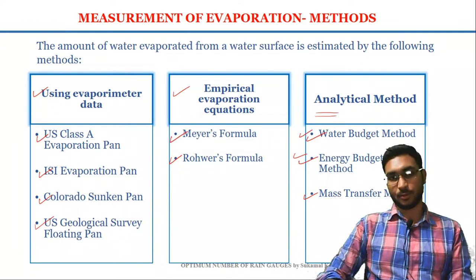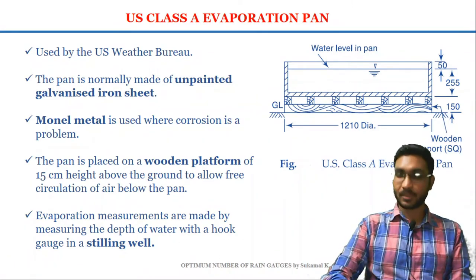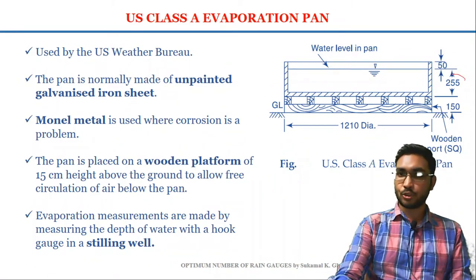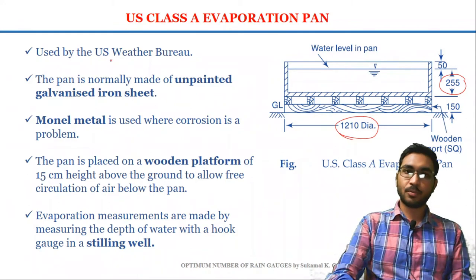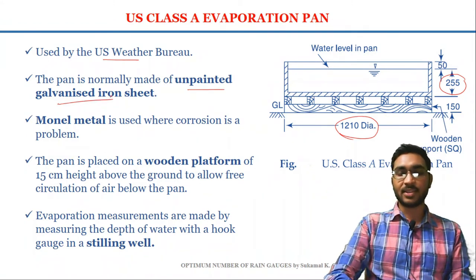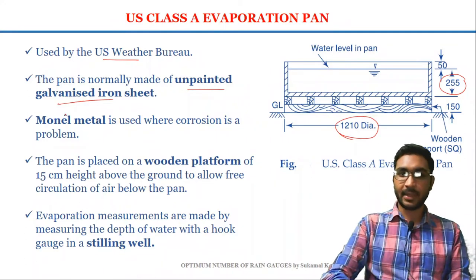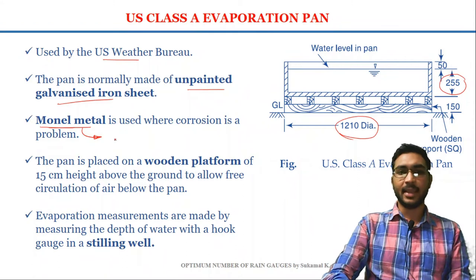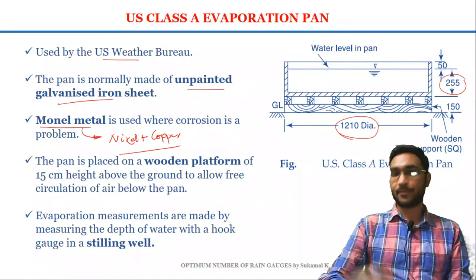Now we are going to discuss about evaporometers. The first type is the US Class A evaporation pan, which has a depth of 255 mm and a diameter of 1210 mm. This pan is used by the US Weather Bureau. The Class A pan is normally made of unpainted galvanized iron sheet, and in areas where corrosion is a major problem, the pan is made of monel metal, which is actually made of nickel and copper.